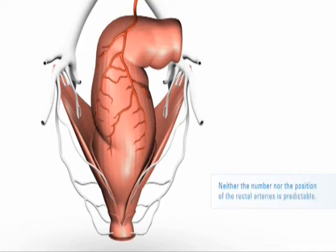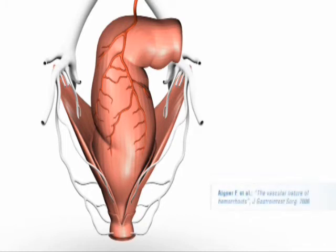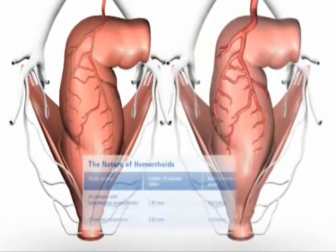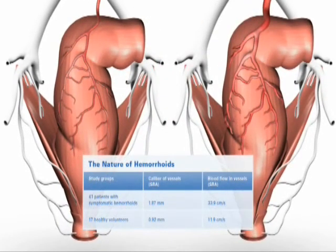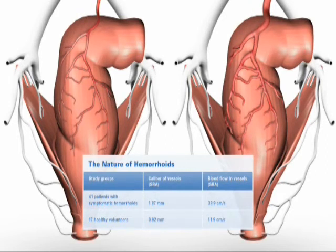This fact plays an important role in explaining the success of the HAL method. A study investigating the diameter of the large rectal arteries as well as the blood flow reveals a second important factor. The results show that in patients with hemorrhoidal disease, these arteries are almost twice as large in diameter, with a blood flow three times greater than in healthy patients.